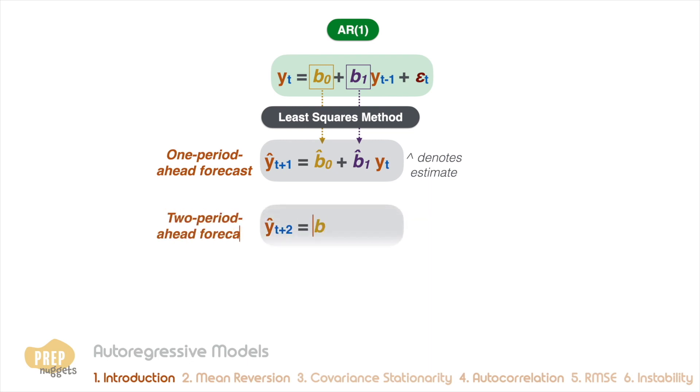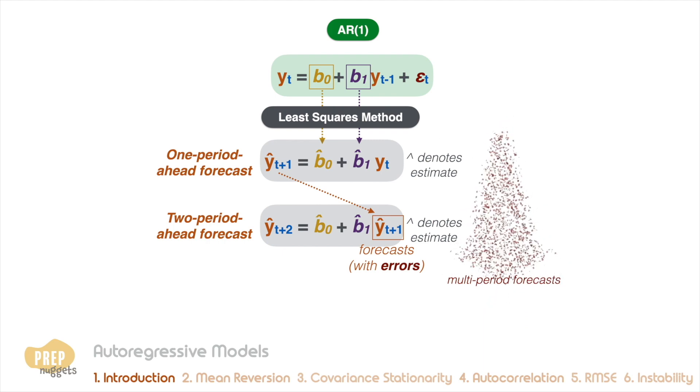A two-period-ahead forecast for the AR(1) model will look like this, where we take the one-period-ahead forecast as the independent variable. Note that the hat symbol indicates that inputs are actually forecasts themselves with errors. This implies that multi-period forecasts are more uncertain than single-period forecasts as the errors accumulate over multiple periods.